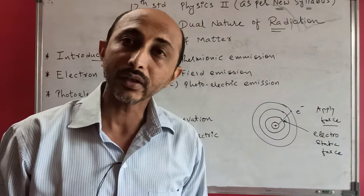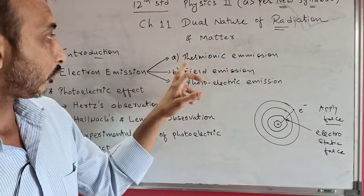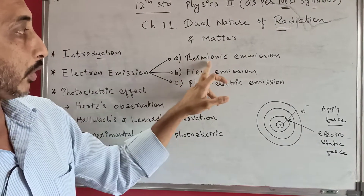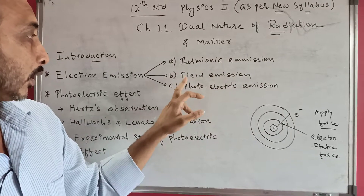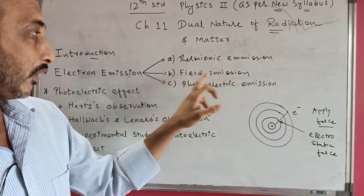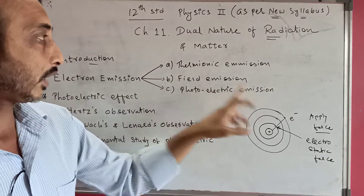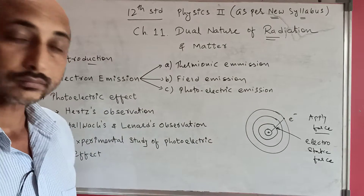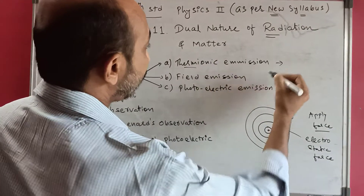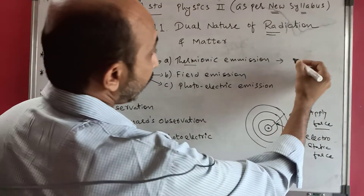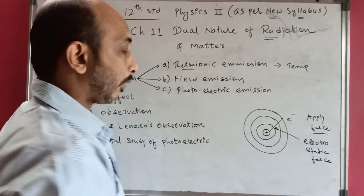This force to free the electron can be applied in many ways, so there are three types of electron emission. First is thermionic emission, second is field emission, and third is photoelectric emission. As the name suggests, thermionic means we apply temperature to the atom.